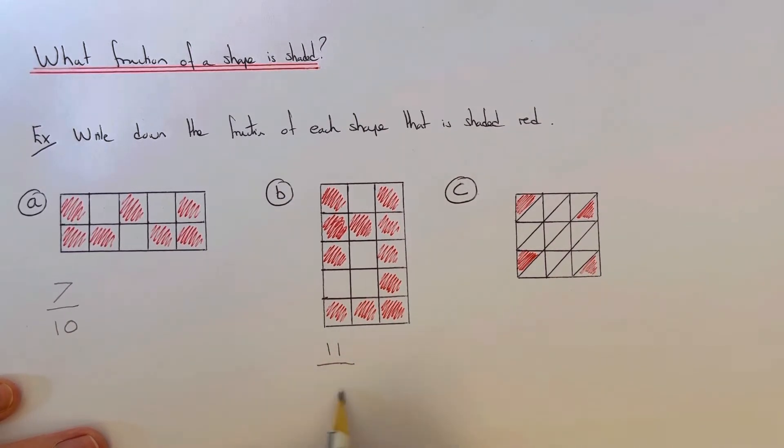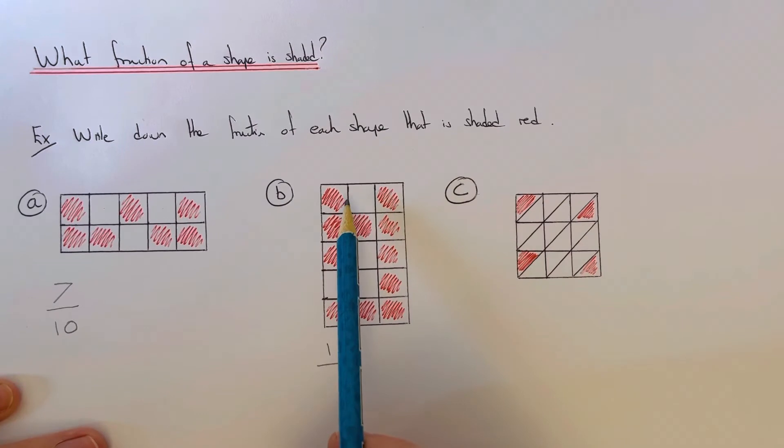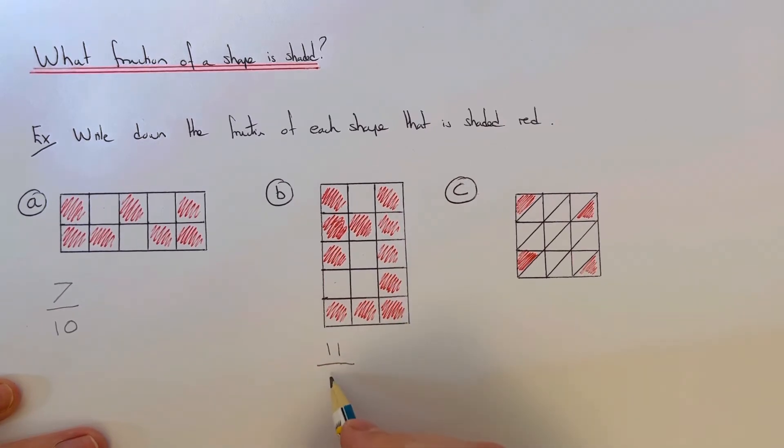On the denominator of the fraction, we put how many squares are shaded altogether. So we've got one, two, three, four, five, six, seven, eight, nine, ten, eleven, twelve, thirteen, fourteen, fifteen. So eleven-fifteenths of the shape is shaded red.